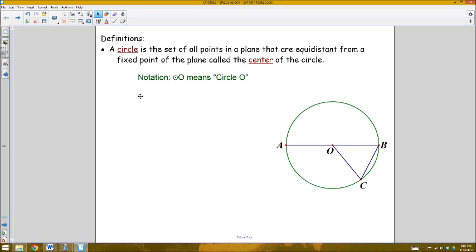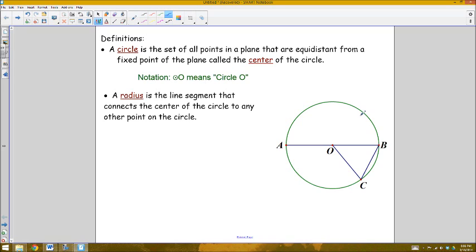Now there's some other parts of a circle that are going to be really important. This fixed distance that each of the points on the circle are away from the center is called the radius. And it's the line segment that connects the center to any other point on that circle. So for example, one radius would be a point connecting the center O to a point on that circle. So OB would be one such radius. Also, O to A, this segment is another radius. In fact, any one of these segments connecting the center to a point on the circle would make up a radius of the circle.